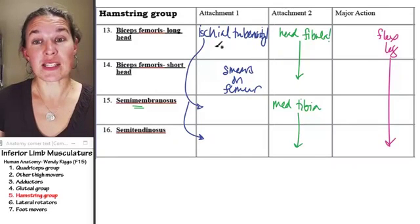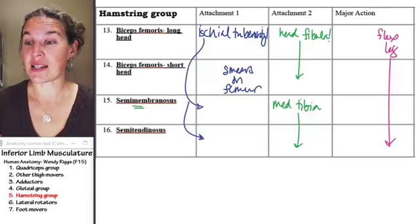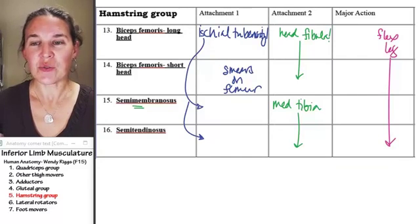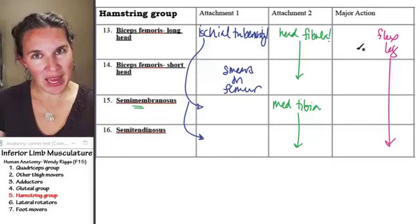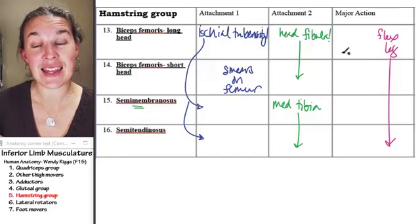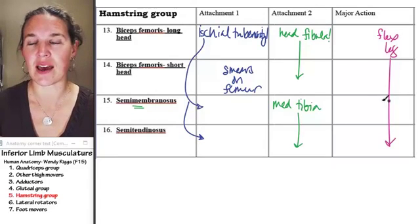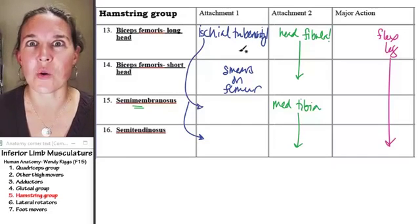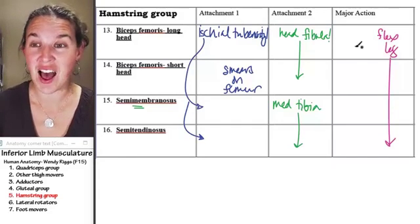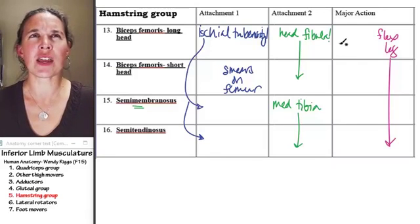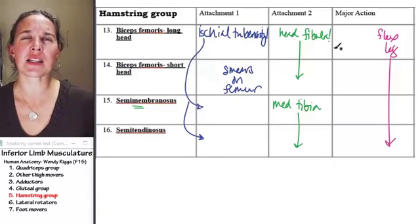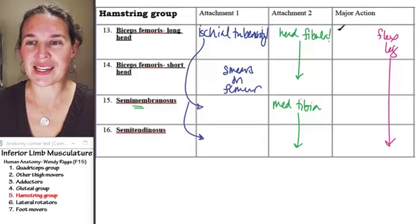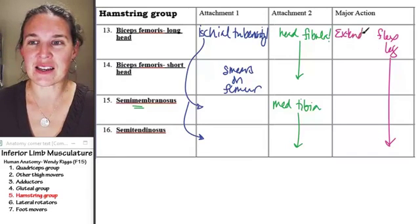Because most of these guys attach to the ischial tuberosity, what is their other action? You know that since they span the hip joint, they have to do something to the thigh, and you tell me what are they going to do? They're on the posterior aspect. They're attached to ischial tuberosity. They are going to extend the thigh.